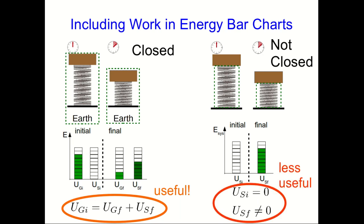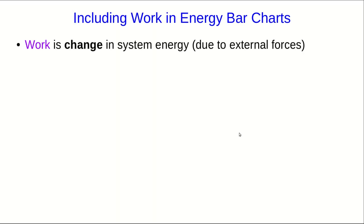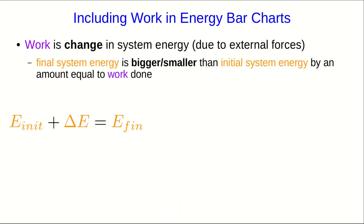But if we want to solve for something, that is certainly less useful. The problem here is that our bar chart is missing a piece. It's missing the work, and the work is the change in the system energy. So in other words, the final system energy is bigger or smaller than the initial system energy by an amount that's equal to the work done. So if we can include that in the bar chart, we should have all our bars add up to the same size on both sides.